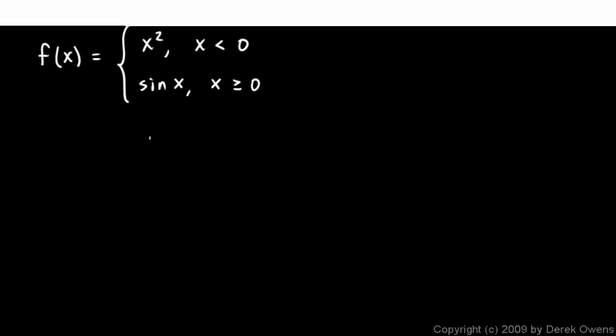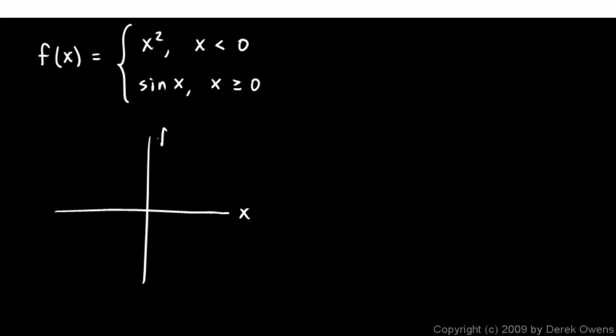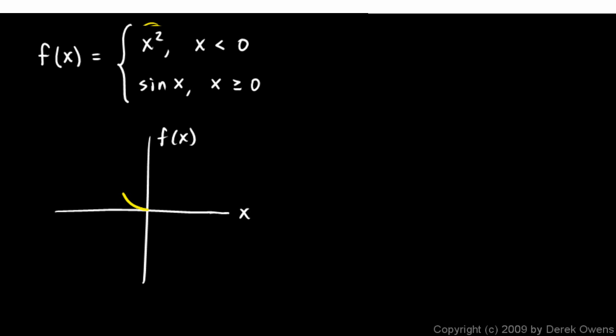So let's graph this. If we graph this, it's going to look like this. When x is less than 0, so when x is negative, we're graphing the x squared function. So it looks like this. Just a parabola.